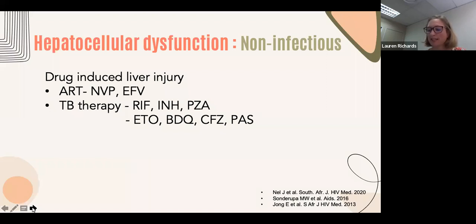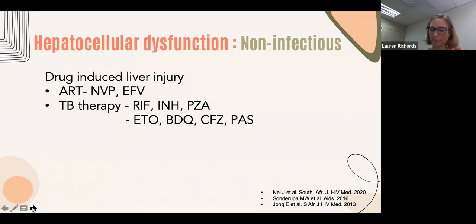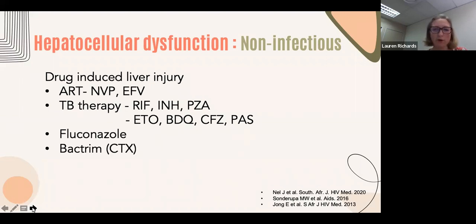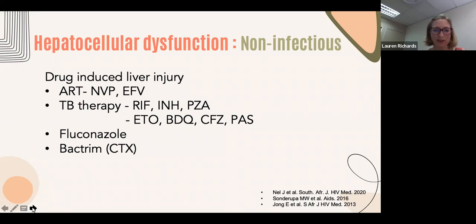First-line TB drugs can cause hepatotoxicity — all except ethambutol. Drug-resistant TB treatment agents that can cause hepatotoxicity include ethionamide, bedaquiline, clofazimine, and PAS; fluoroquinolones and delamanid have also been implicated. These patients are often on azoles and co-trimoxazole (Bactrim) for prophylaxis or treatment — both can cause hepatotoxicity, with Bactrim specifically causing it as part of a systemic hypersensitivity syndrome.